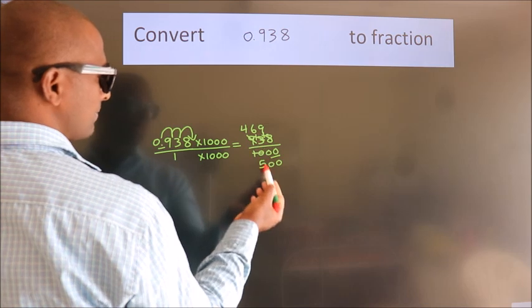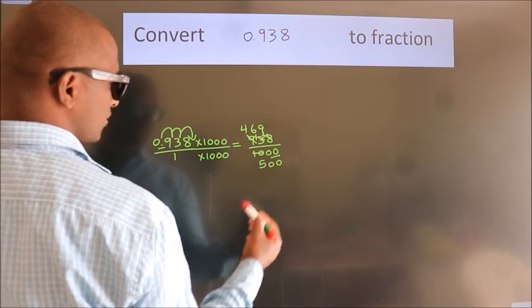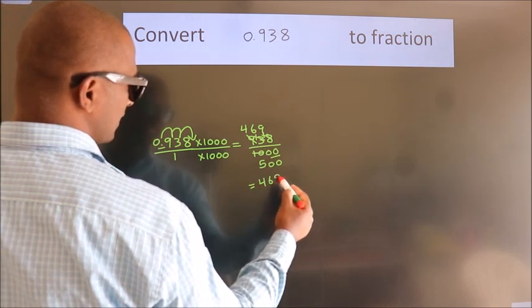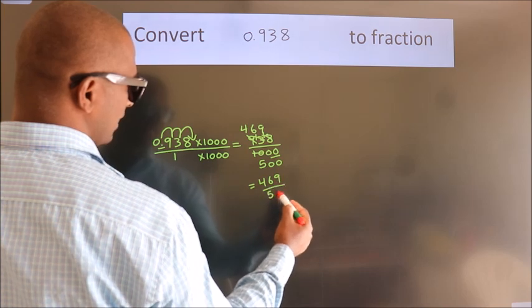Further cannot be simplified. So our fraction is 469 by 500.